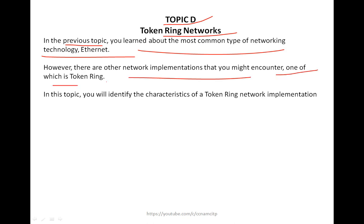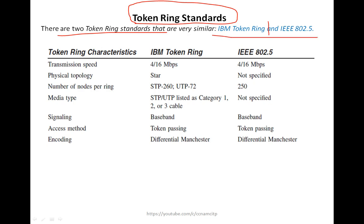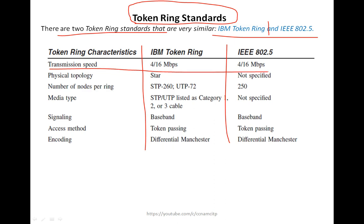Let's look at token ring standards. There are two token ring standards that are very similar: IBM Token Ring and IEEE 802.5. Looking at their characteristics, both have a transmission speed of 4 to 16 Mbps. The physical topology for IBM Token Ring is star topology, while IEEE 802.5 has no specified topology. In terms of number of nodes per ring, STP supports 260 nodes and UTP supports 72 for IBM, while IEEE 802.5 supports 250.